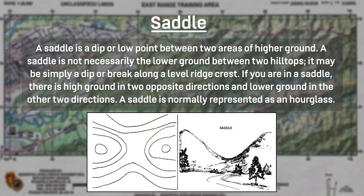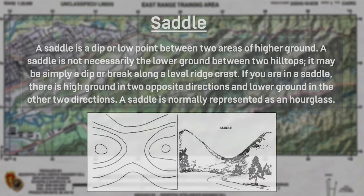A saddle is a dip or low point between two areas of higher ground. A saddle is not necessarily the lower ground between two hilltops — it may simply be a dip or a break along a level ridge crest. If you are in a saddle there is high ground in two opposite directions and lower ground in the other two directions. The saddle is normally represented as an hourglass on the map.